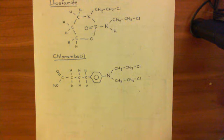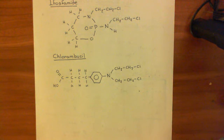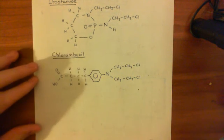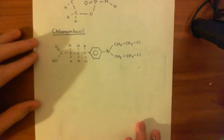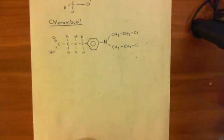Now we've finished with our examples of nitrogen mustard drugs. What we'll move on to is the mechanism by which they work to alkylate DNA. Basically, they attach onto guanine residues within the DNA.